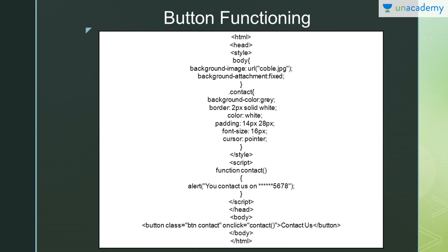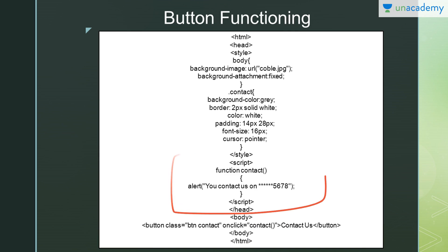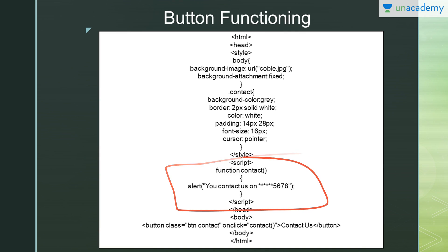Next is button functioning — here we will see how to add an alert box, or pop-up window. Everything is similar to the previous example, except here you write 'onclick=contact()'. 'Contact' is basically the function name. If you want to call a function, you simply write its name with a pair of parentheses. Under the script tag you will define your function.